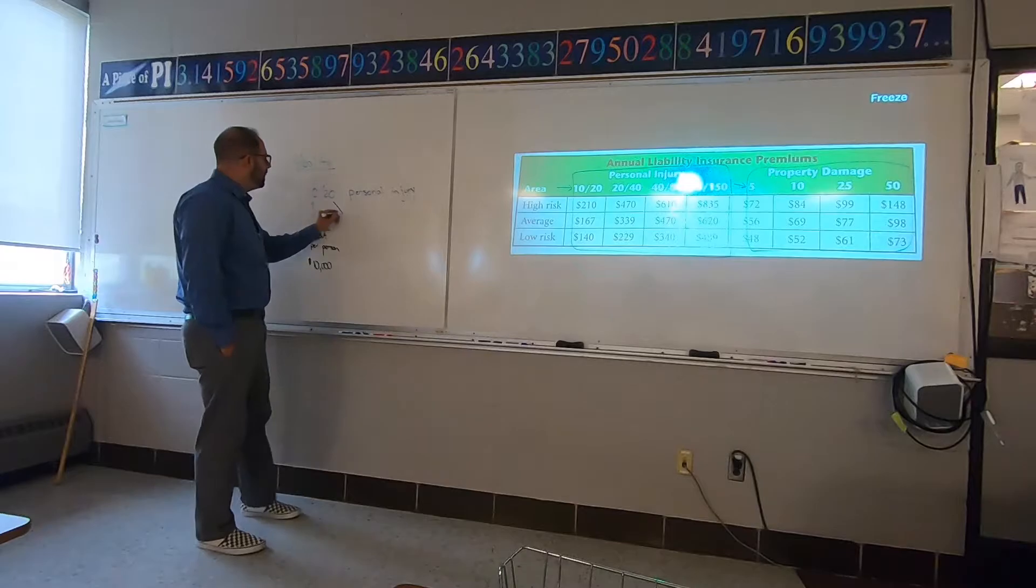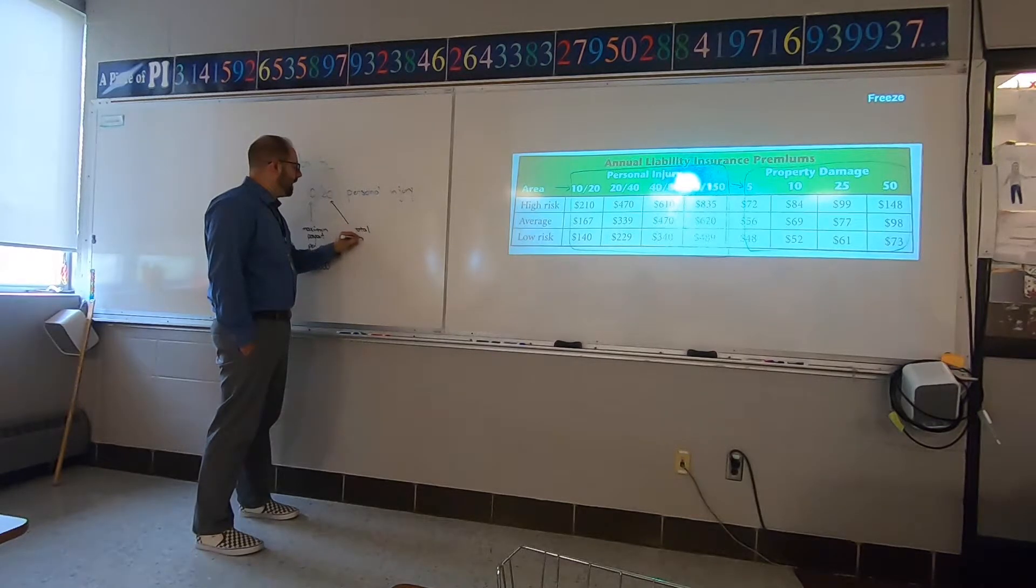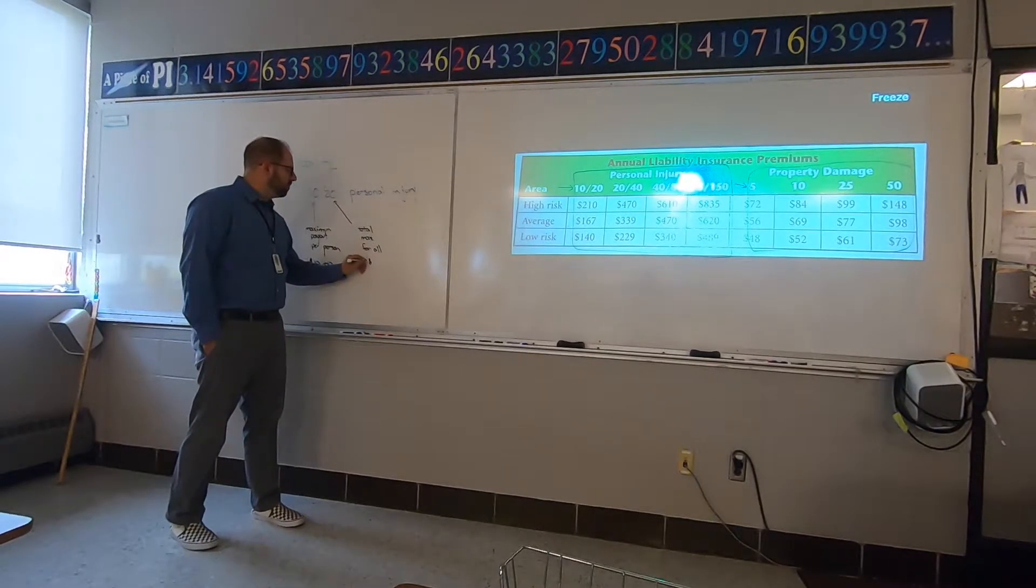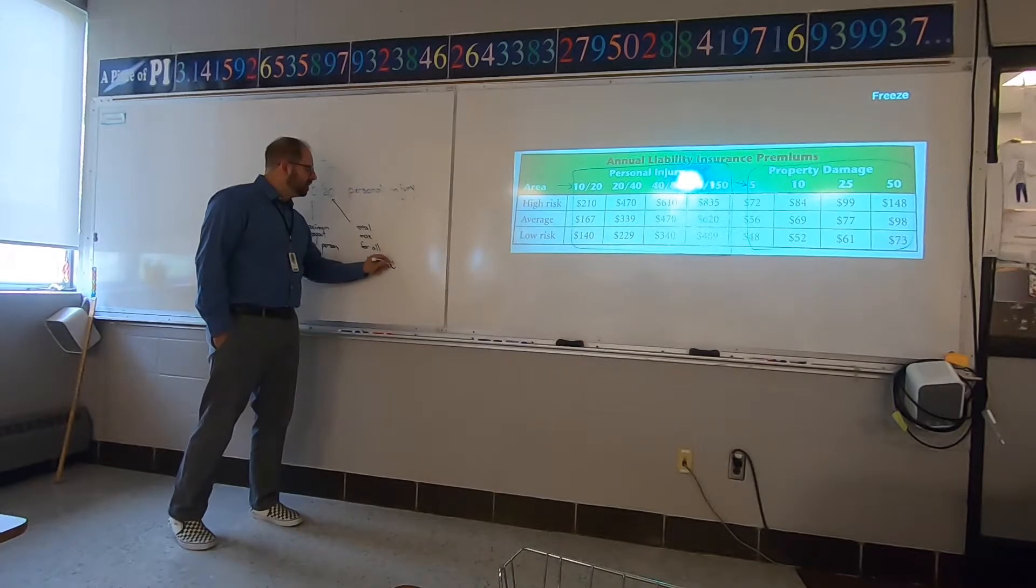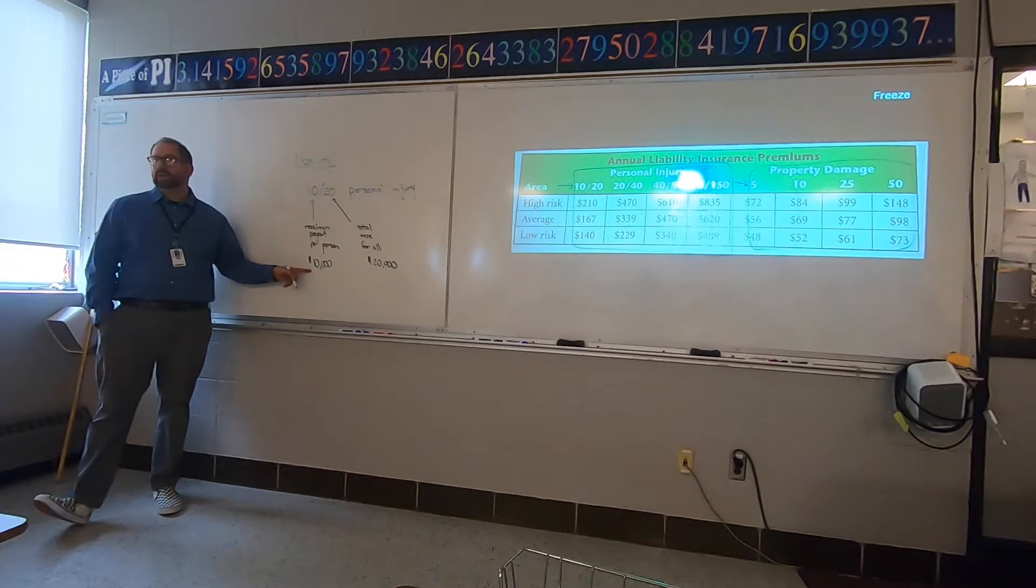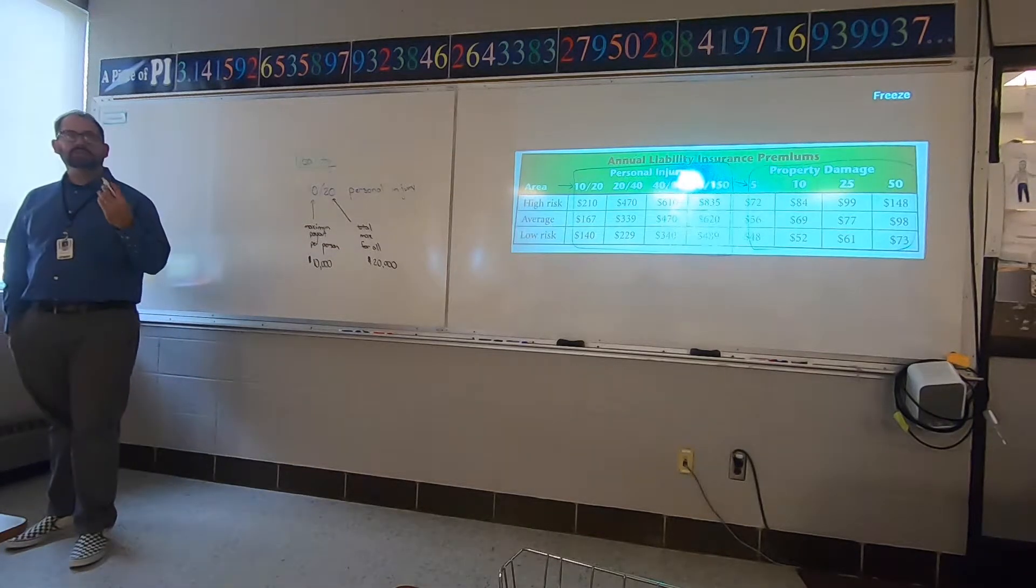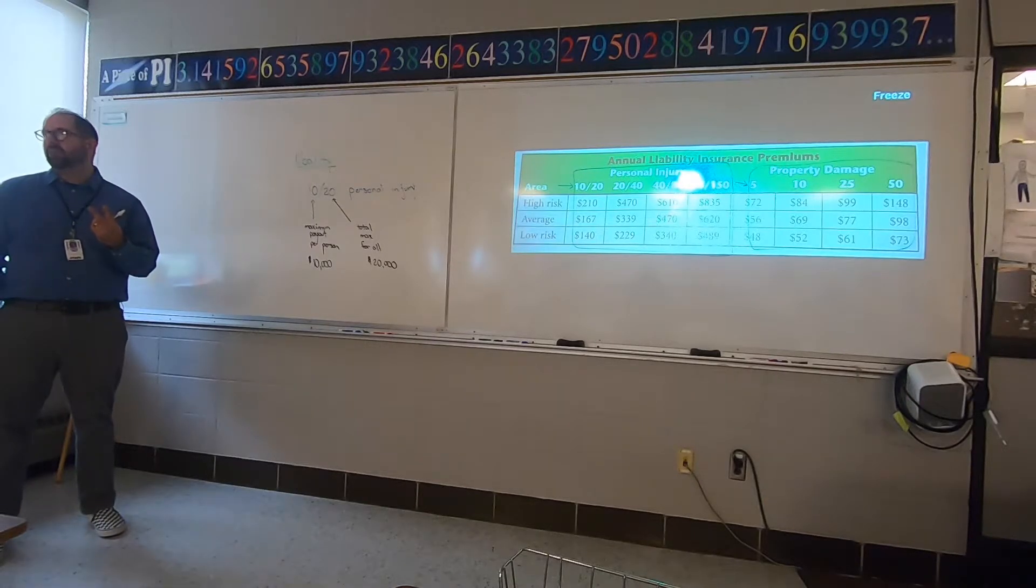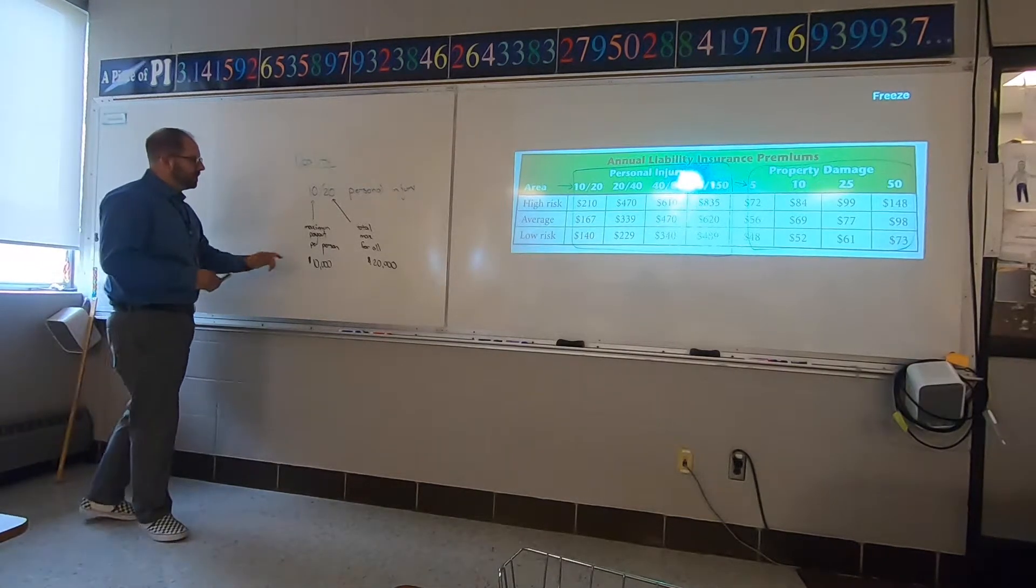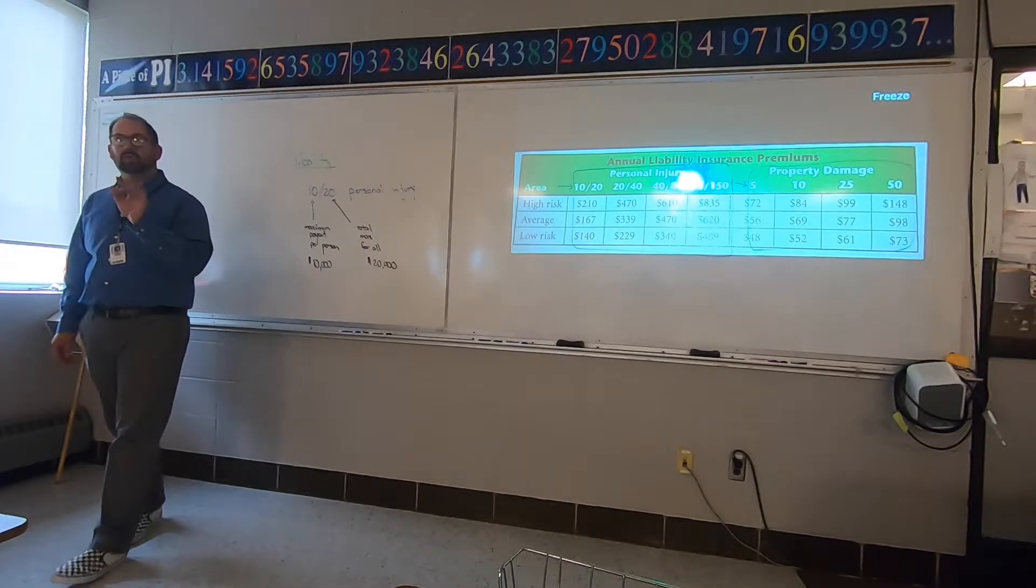The second number is the total maximum. It's the total max for the entire scene, total max for all. So this for the total accident, you'd have $20,000 insurance covering everything. That means if you can do a max payout of $10,000 per person, max payout, and you have a total max for the entire scene of 20, it means you can really only have two people covered if they max out your insurance.